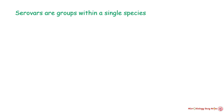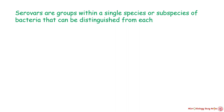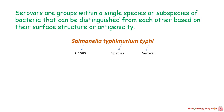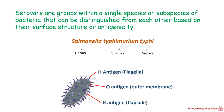Serovar are groups within a single species or subspecies of bacteria that can be distinguished from each other based on their surface structure or antigenicity. For example, in Salmonella typhi medium typhi: salmonella is the genus, typhi medium is the species, and typhi is the serotype. Salmonella serotyping is determined by the expression of antigens on their surface. Major antigens are: O antigen on the outer membrane, H antigen present in flagella, and K antigen present on the capsule.